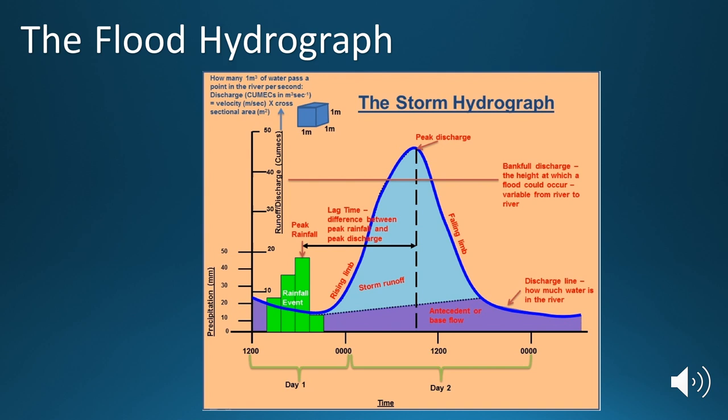So if we run through this, we can see that to start off with at 12 o'clock, along the bottom we're working in time, along the x-axis, we can see that we get a slight decrease and then we get an increase in river discharge up to the peak, a decrease in river discharge, and then a flattening out of the curve back to normal levels. So let's talk through and run through each of these stages.